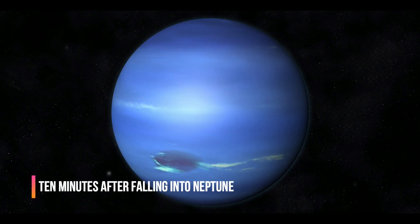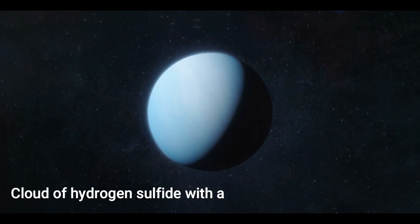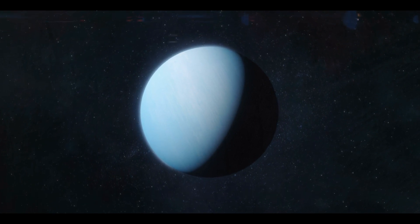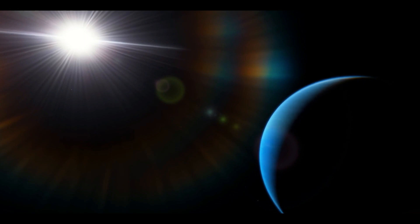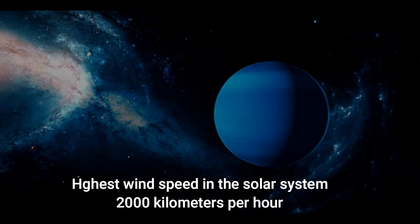After 10 minutes on Neptune, you've descended to a depth of 50 kilometers and encountered a cloud of hydrogen sulfide with a terrible odor everywhere. The surrounding pressure is over five times that of the Earth's ordinary atmospheric pressure. It also boasts the highest wind speed in the solar system, reaching 2,000 kilometers per hour.